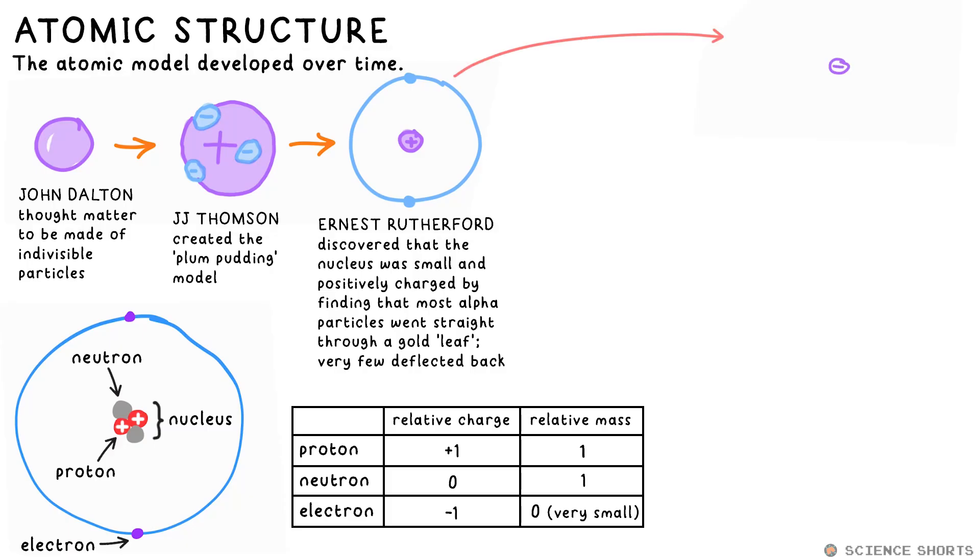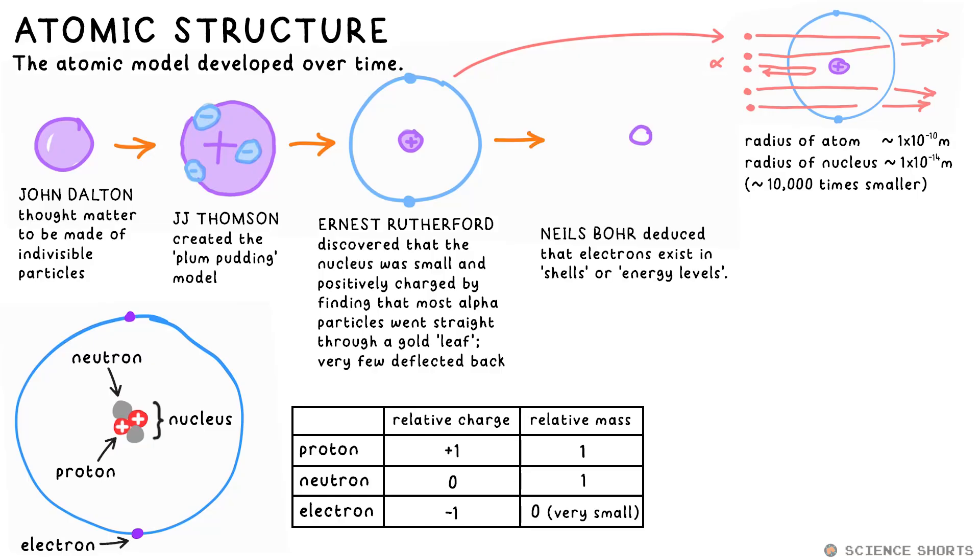It was Ernest Rutherford who then found out that the positive part of the atom must be incredibly small. We call this the nucleus and we know the electrons must be far away from it. Niels Bohr later discovered that electrons exist in shells or orbitals. Then James Chadwick discovered that the nucleus must also contain some neutral charges. He called these neutrons while we call the positive charges protons.